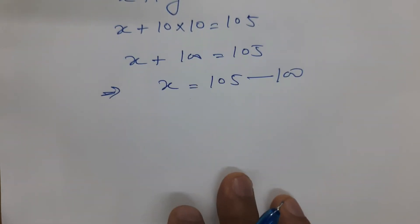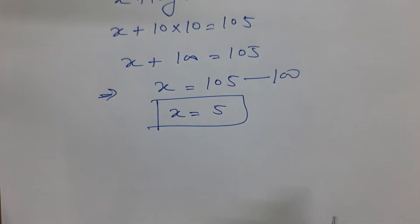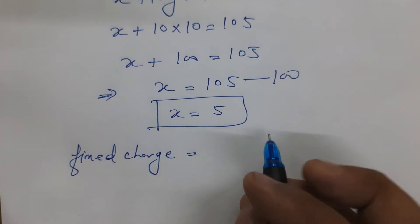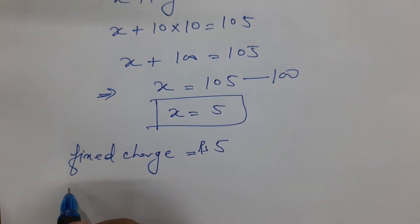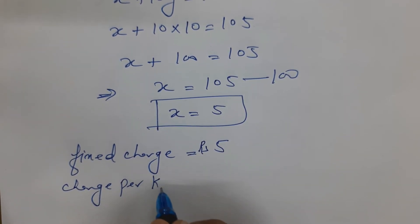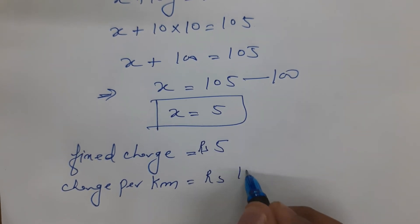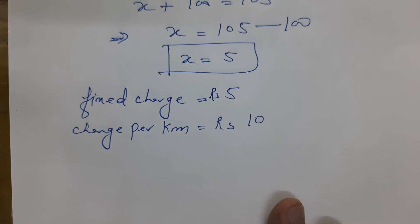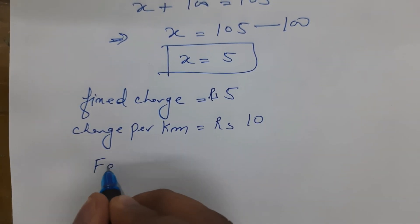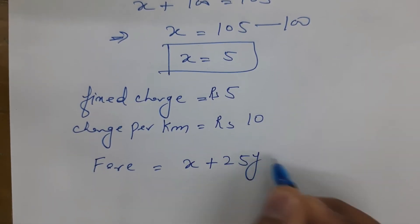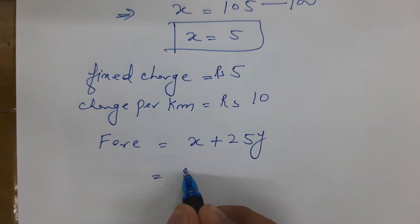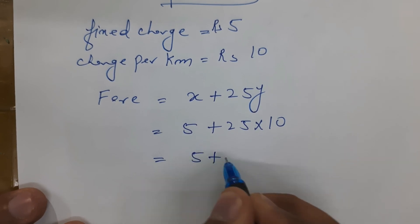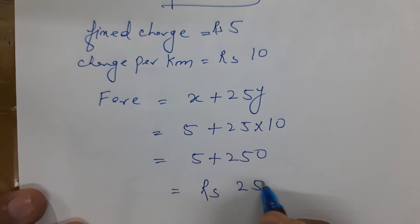As I explained earlier, when we move a term from the left side to the right side, the sign changes. So x equals 5. We had taken x as the fixed charge, so the fixed charge is 5 rupees. The charge per km is y, which equals 10. For the next part of the question — how much does a person pay for 25 km — the total charge equals x plus 25y, which is 5 plus 25 into 10, giving 5 plus 250 equals 255 rupees.